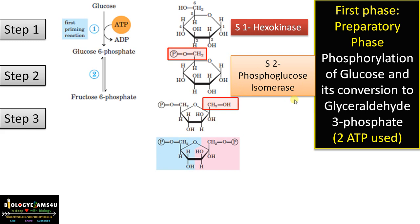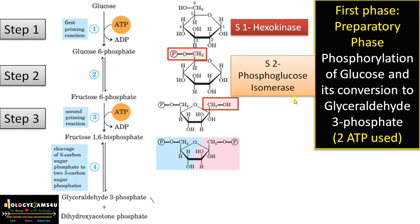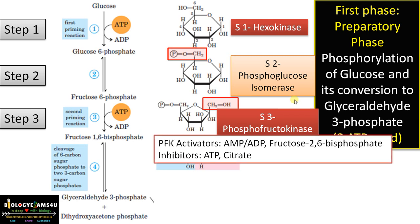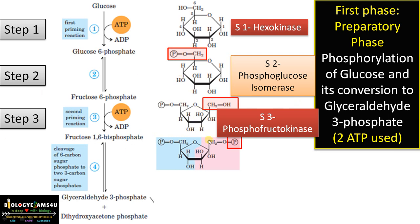In step 3, fructose-6-phosphate is converted to fructose-1,6-bisphosphate. This is an important regulatory step catalyzed by PFK, or phosphofructokinase. This is the rate-limiting step in glycolysis that determines the pace of the reaction. PFK is activated by AMP, ADP, and fructose-2,6-bisphosphate. It is inhibited by high amounts of ATP and also by citrate, which is formed in the Krebs cycle. At the first position, a phosphate group is added.